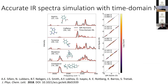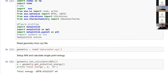Now we have energy, forces, charges, and dipoles. We can run and simulate IR spectra in the gas phase and compare with QM. Basically, you can get very nice IR spectra from running MD time-domain simulations — everything done by the machine learning potential.